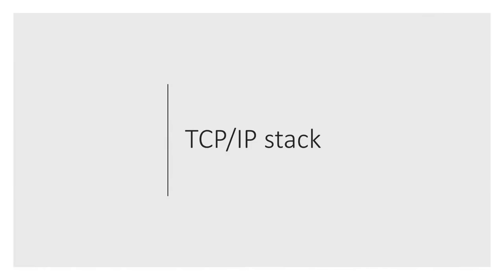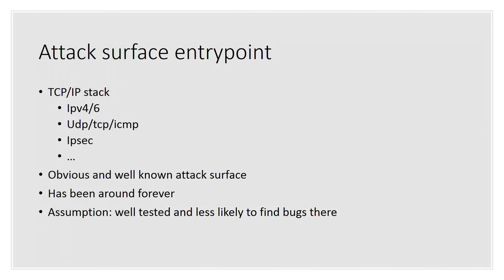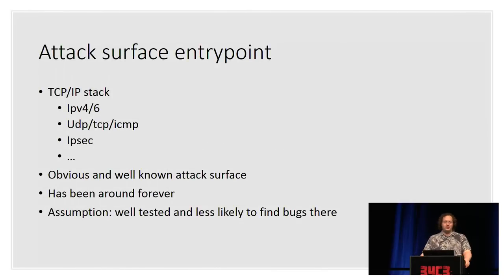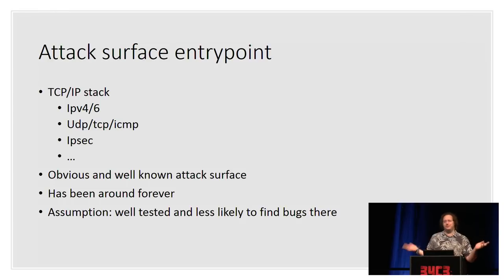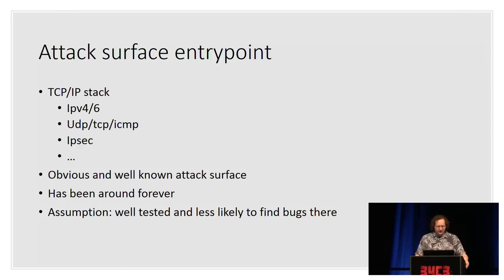Now let's move on to the TCP stack. My assumption was that it's very well-tested and less likely to have bugs — the BSD stack has been around since at least the 80s, and it's incredibly well tested. The TCP stack includes IPv4, IPv6, UDP, TCP, ICMP, IPsec, Ethernet, and similar things. It's been around forever, so my assumption was: unlikely to have bugs. But I start looking around and I find something in OpenBSD's network stack which parses PPPoE packets.